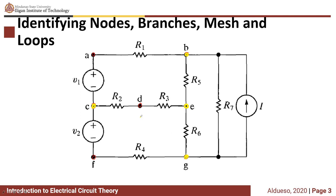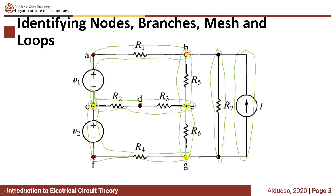Now, which branches are essential branches? An essential branch is a path which connects two essential nodes without passing through an essential node. Two nodes are connected but it does not pass through an essential node. We will label only the essential nodes, not every node.